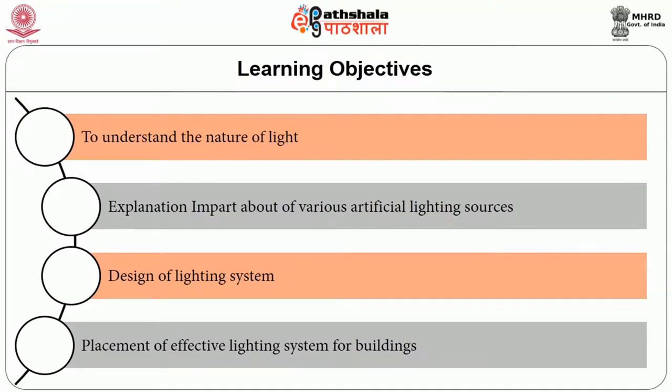Lighting is an essential part of any building. Apart from its aesthetic and decorative aspects, good lighting has a strictly utilitarian value in reducing accidents, increasing the output of factory and other workers, and improving the general health of the community due to the reduction of eye strain. The science of illuminating engineering is therefore becoming of major importance. Objectives: to understand the nature of light, impart knowledge about various artificial lighting sources, design of lighting system, and placement of effective lighting system for buildings.